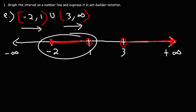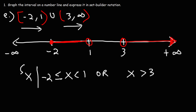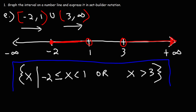So let's start with the first interval: x is less than 1 but doesn't include 1, and it's greater than or equal to negative 2 — so it's between negative 2 and 1. Or, for the other interval, x is greater than but not equal to 3. Now let's write it in set builder notation. This is the answer on a number line, and this is our answer expressed in set builder notation.